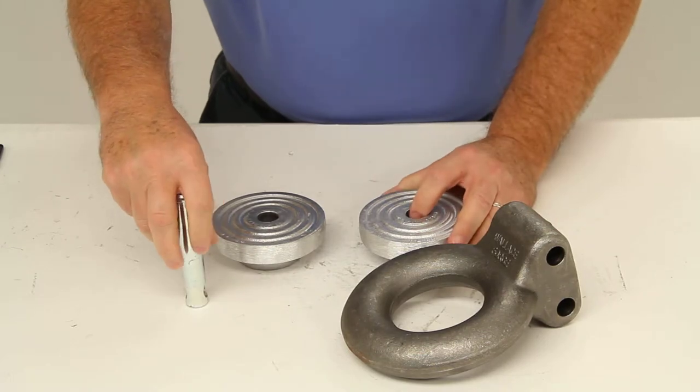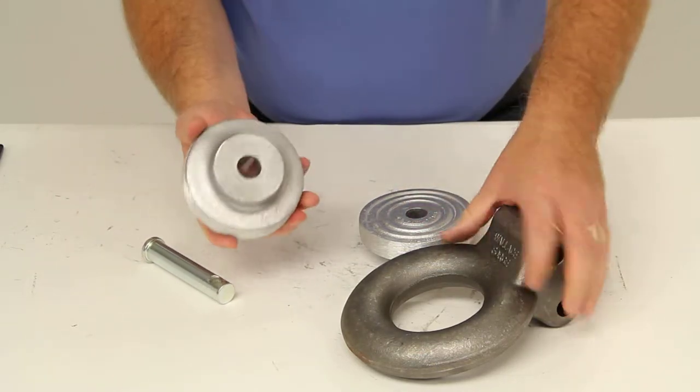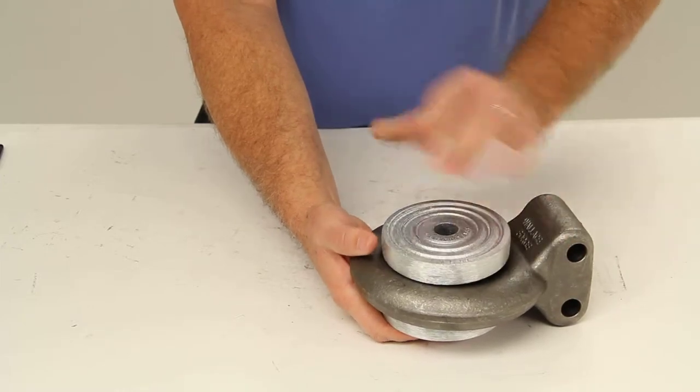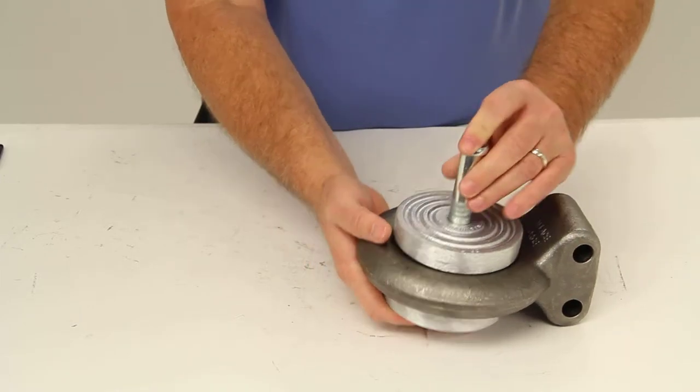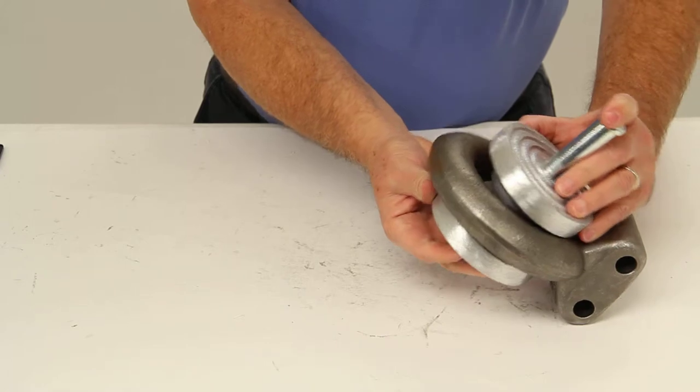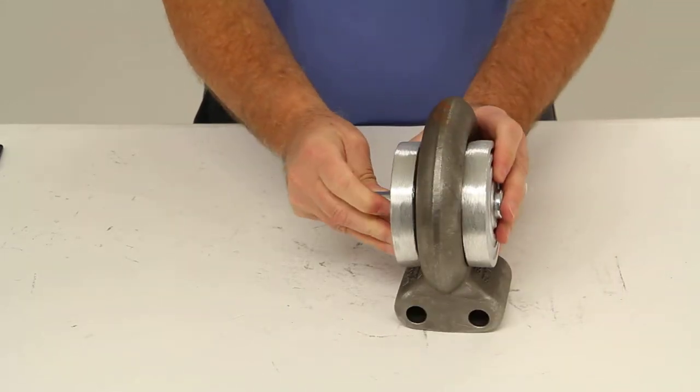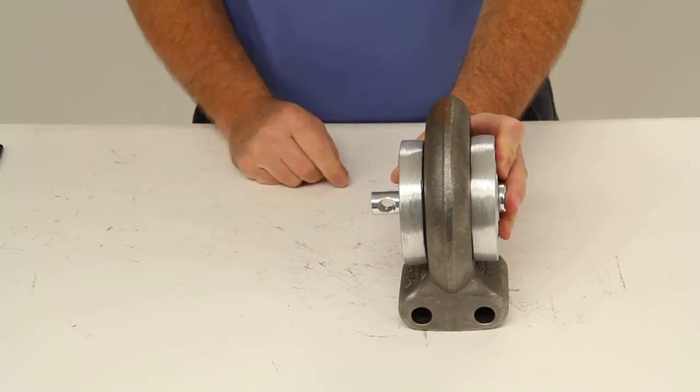The way this lock would work is you'll take one of the pieces, put it on the bottom, the other piece on top, and take the three-quarter inch diameter pin and slide it through both pieces until it comes through the bottom. And you can see the three-eighths inch hole right there.